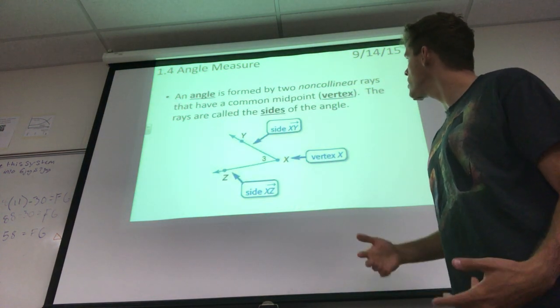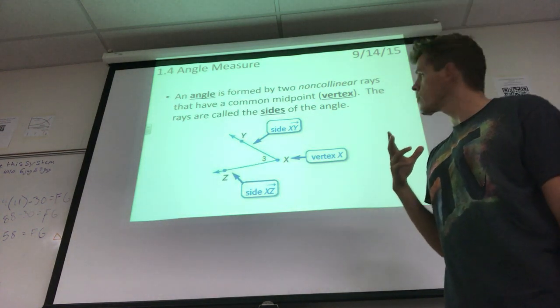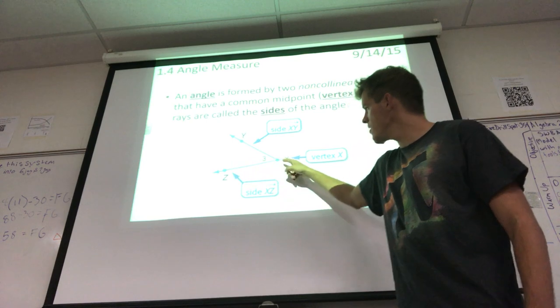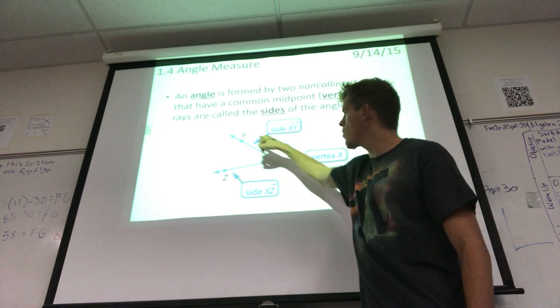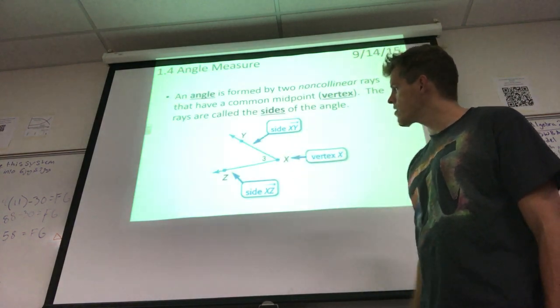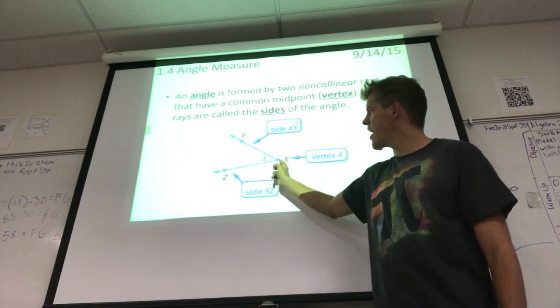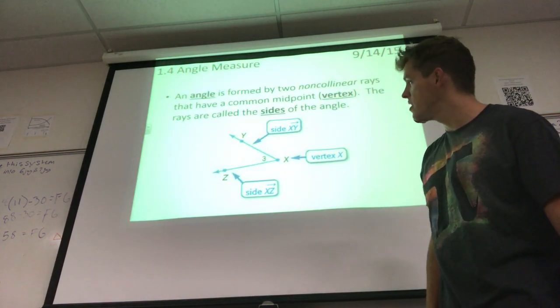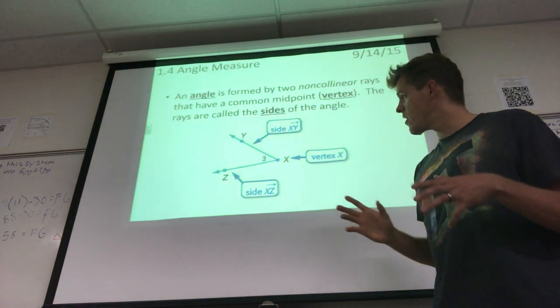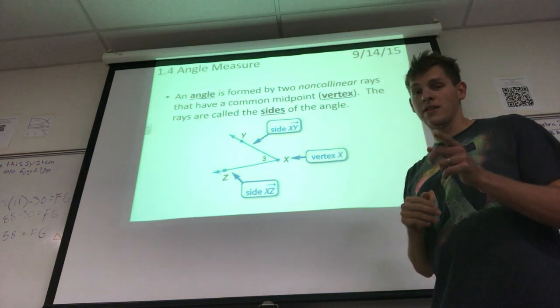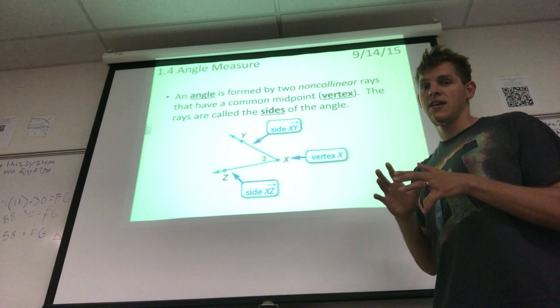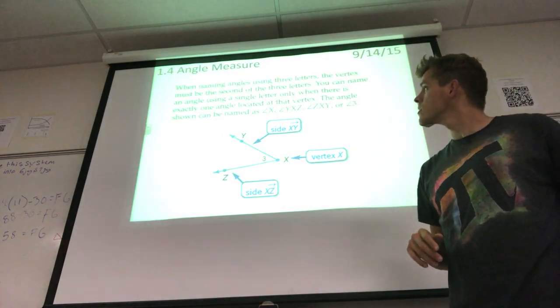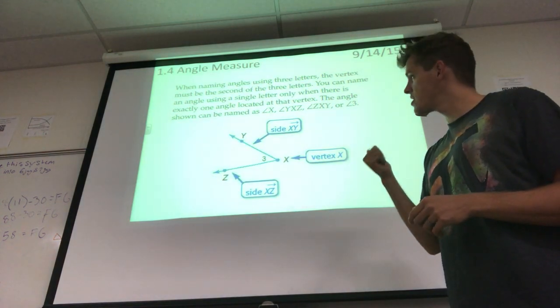An angle is formed by two non-collinear rays that have a common endpoint we call the vertex. The rays are called the sides of the angle. We could call this angle ZXY, angle YXZ, angle 3, or even angle X. My students, I would say you do not want to call this angle X. Do not get in the habit of calling it by a single letter. When naming angles use three letters.